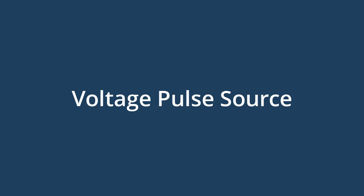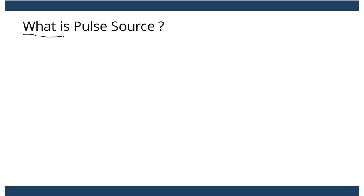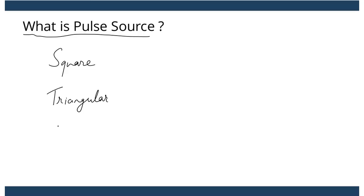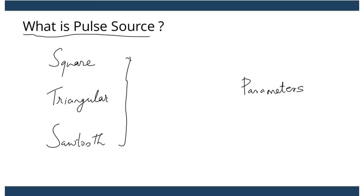Hi guys. In this video lecture we will understand what is a pulse source. In many circuit simulation softwares, we often have to simulate various types of sources such as a square waveform, a triangular waveform, or even a sawtooth waveform. In order to create these different types of waveforms, we need to understand what is a pulse source and what parameters relating to a pulse source we can change. By changing these parameters, we can create all the different kinds of waveforms useful for circuit simulation.